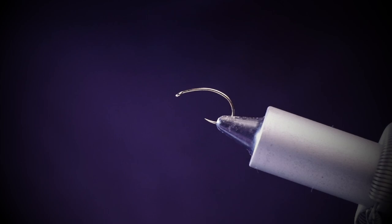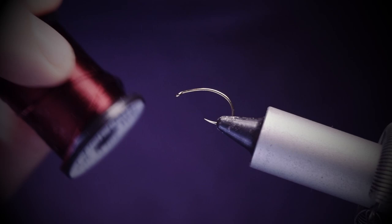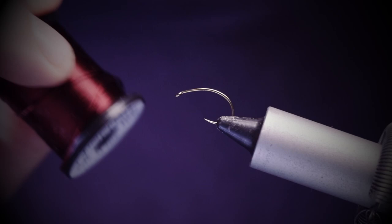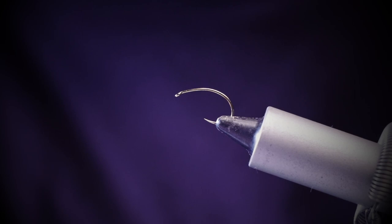So the materials you're going to need for this are a uni in fire orange, a red microglint, some uni floss in wine. The hook I'm using is a Fulling Mill Czech Nymph, size 12.